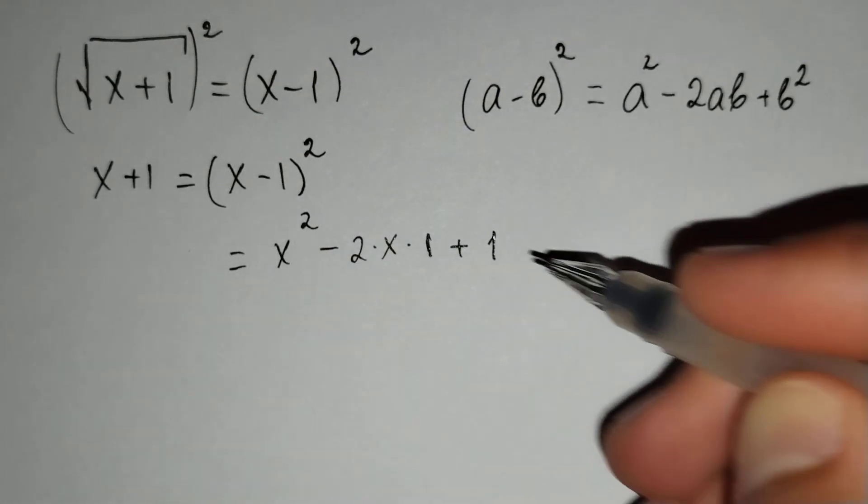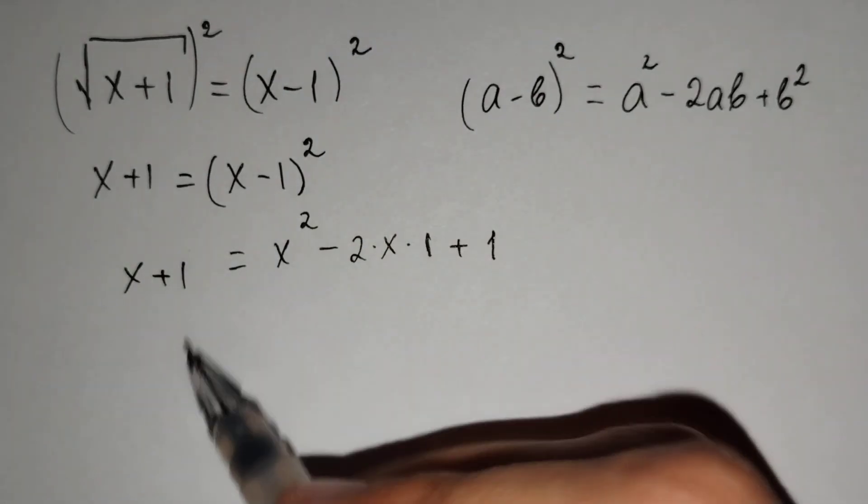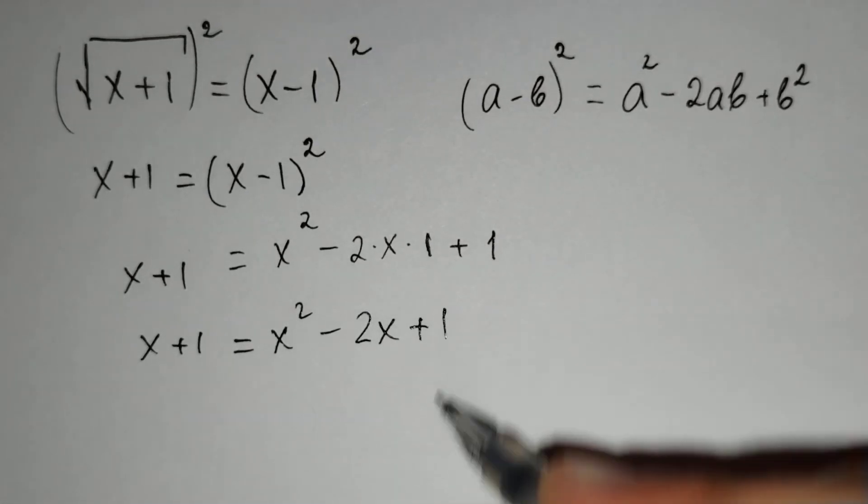1 squared equals 1 equals x plus 1. And here, x plus 1 equals x squared minus 2x plus 1.